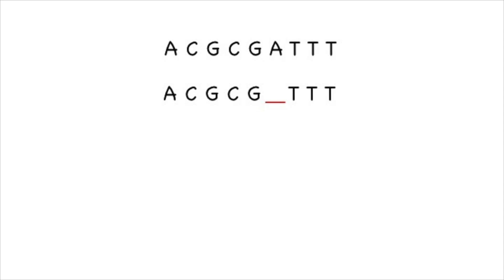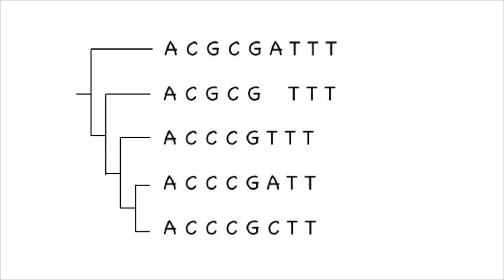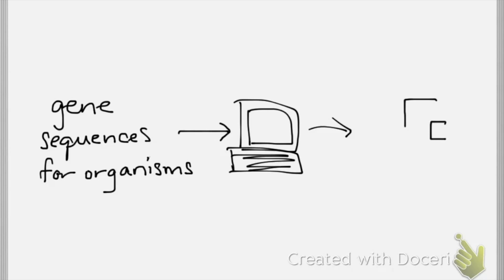Now let's look at some real DNA sequences and do the same thing. We'll start with the sequence ACGCGATTTT. It changes first to ACGCGTTT with the deletion of the A. Next it mutates to ACCCGTTT with the G changing to C. After that it becomes ACCCGATTT with the T changing to A. And finally it becomes ACCCGCTT with the A changing to a C. We could generate the same gene tree here as before, showing the gradual evolution of this sequence throughout several major lineages. In real life we usually start with gene sequences from a group of organisms and use a computer to generate the gene tree.